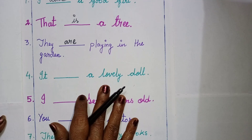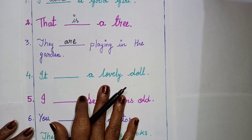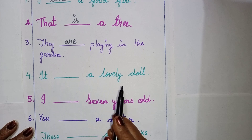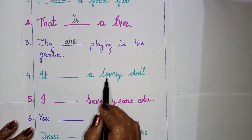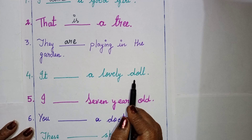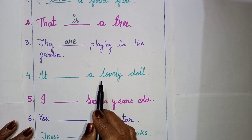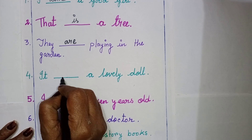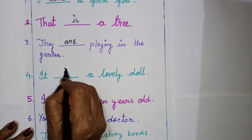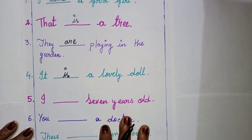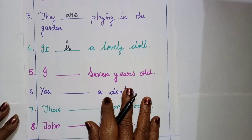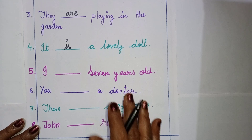Number four: it dash a lovely doll. A lovely doll means it is one thing, so yes — it is. It is a lovely doll. So 'is' goes with a single thing, one thing.